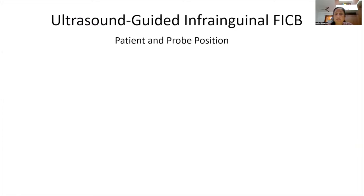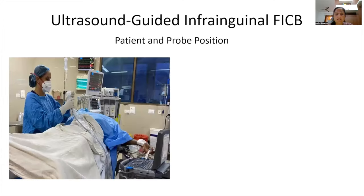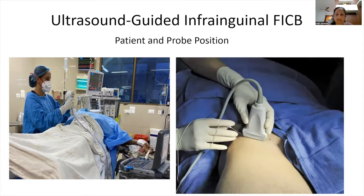For the ultrasound guided infrainguinal fascia iliaca compartment block, the patient lies supine with the leg slightly abducted. A linear ultrasound probe is used and the procedure is performed under sterile conditions. The probe is placed transversely just below the inguinal crease, similar to how it is positioned for a femoral nerve block, and the direction of needle entry is from lateral to medial.